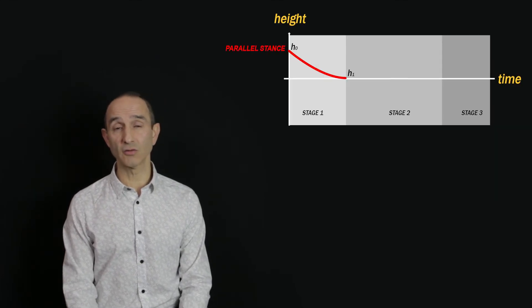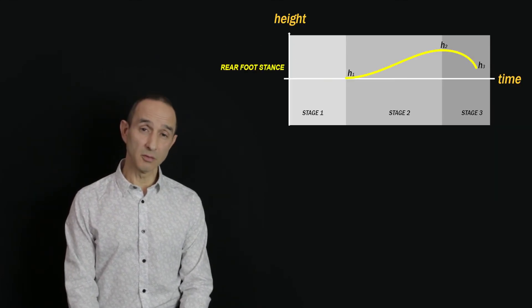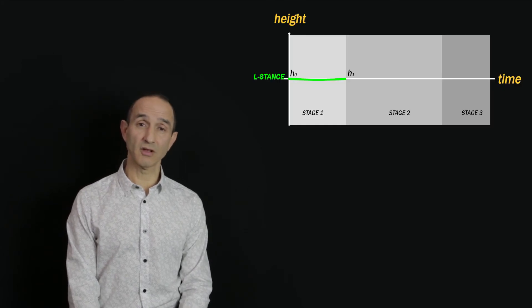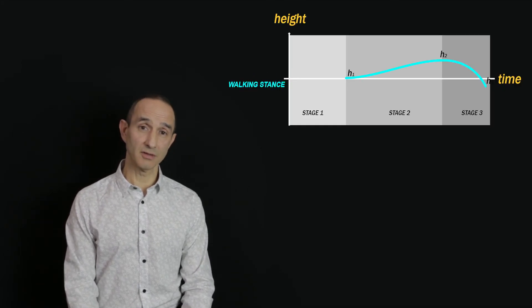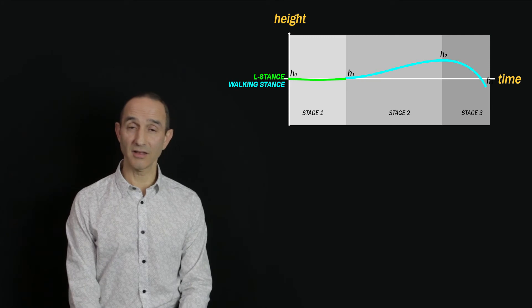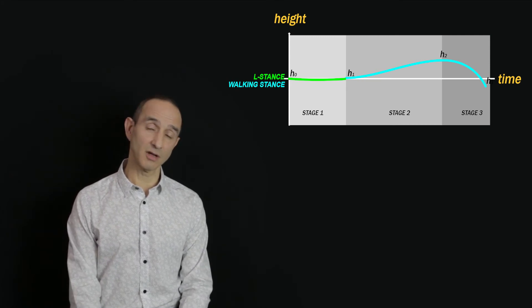The graphs for stage 1 and the graphs for stages 2 and 3 can be combined together in different permutations. For example, if you're going from parallel stance to rear foot stance you can put these two graphs together, and if you're going from L stance to walking stance you can put those two together, and that will give you an idea of what the sine wave motion should look like.